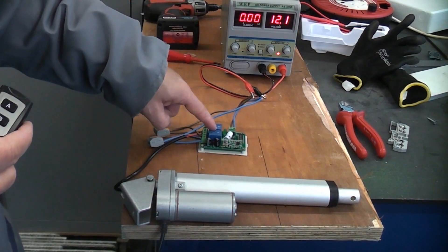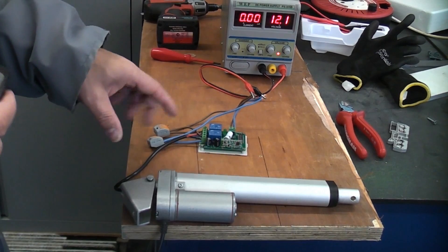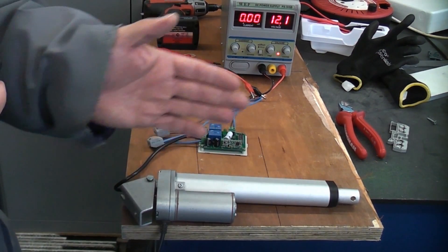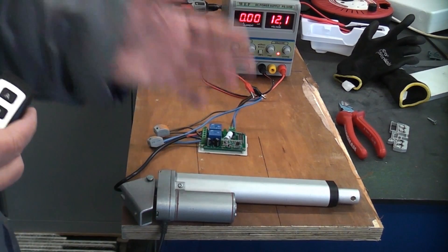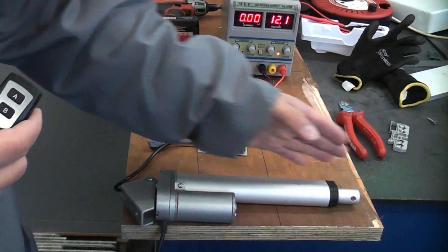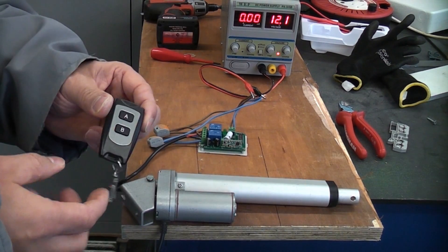These circuit boards are incredibly useful if you're doing a project at home. For example, if you're using a DC motor like this and you need it to forward and reverse. In this instance we're using a linear actuator so that will extend and retract depending on which button is pressed.